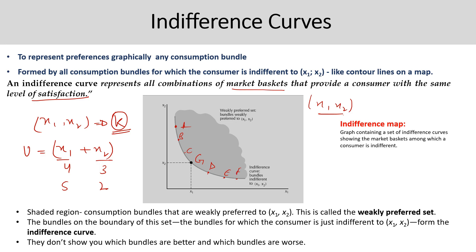The shaded region in gray in the figure represents bundles that are weakly preferred — meaning less preferred. Points in the shaded region, such as L, M, or N, are not feasible; a consumer cannot afford those combinations of x1 and x2. So they are the weakly preferred set, shaded above the indifference curve. The bundles on the boundary of this set — those for which the consumer is just indifferent — like the combinations from A to F — form the indifference curve.